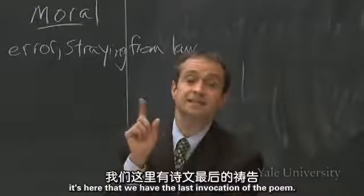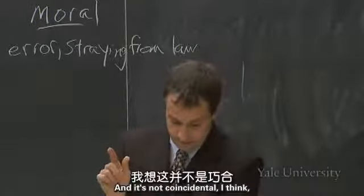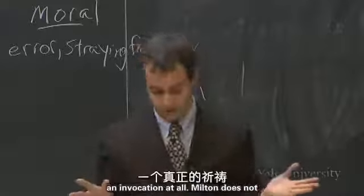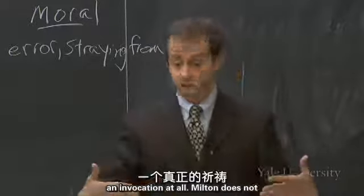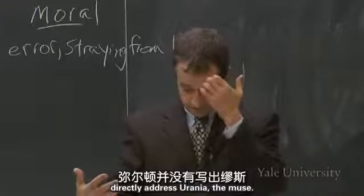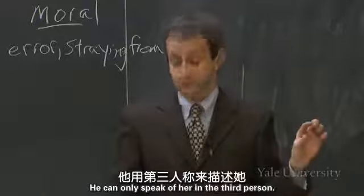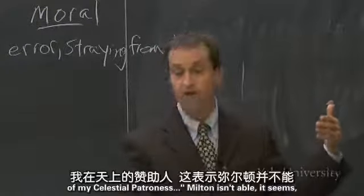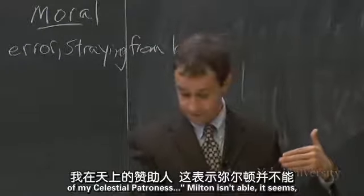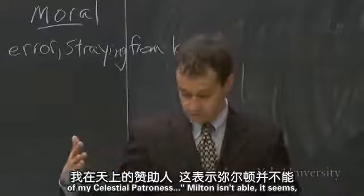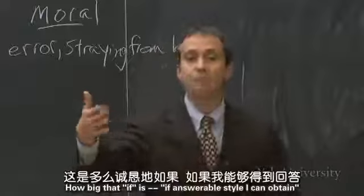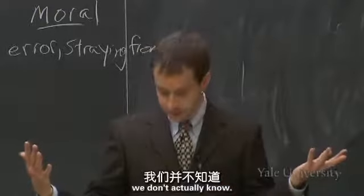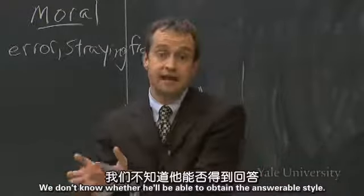It's here that we have the last invocation of the poem. And it's not coincidental that this last invocation of Paradise Lost is not actually an invocation at all. Milton does not directly address Urania, the muse. He can only speak of her in the third person. This is line 20: "If answerable style I can obtain of my celestial patroness." Milton isn't able to address the muse directly anymore. And how big that "if" is — if answerable style I can obtain — we don't actually know.